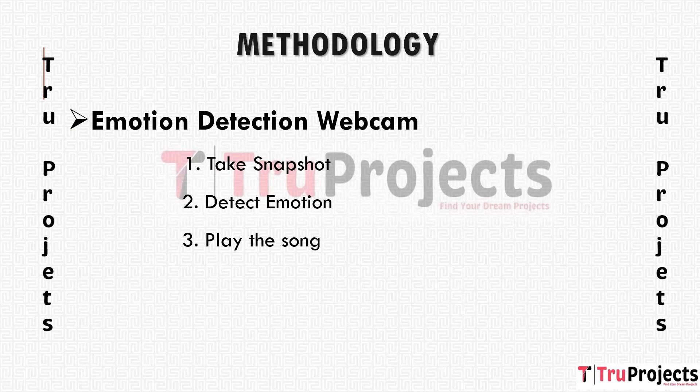In the emotion detection webcam module, the user accesses the webcam to initiate the process. The webcam captures facial expressions in real time, and this captured image is used as input for subsequent steps. Within this module, users click on the 'Take Snapshot' button, which freezes the current webcam frame, capturing the user's facial expressions at that moment. The snapshot image is then stored and used for emotion detection.